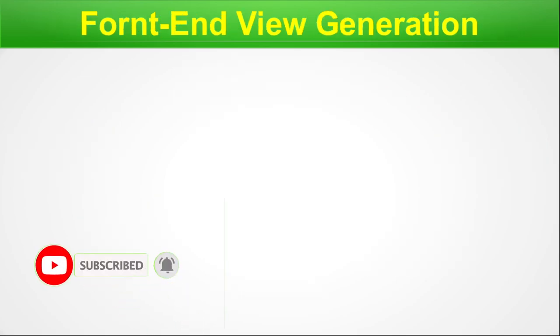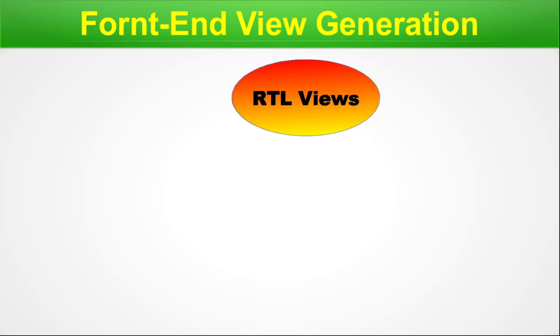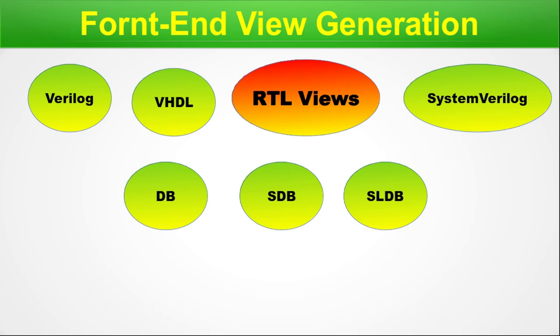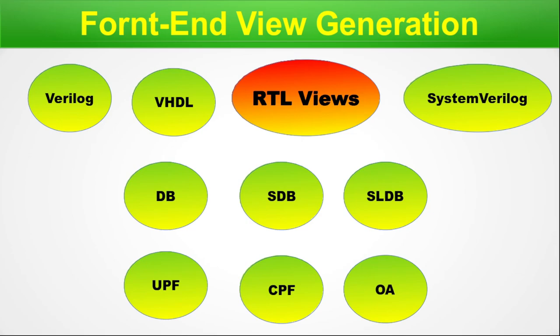Front-end views. The different front-end views available in a standard cell library — generated by standard cell design engineers — are majorly RTL views and some others. These include: Verilog, SystemVerilog, VHDL (plain RTL formats); DB, SDB, SLDB (Synopsys formats); UPF and CPF (UPF used by Synopsys, CPF used by Cadence tools); and Open Access (an open format used by all tools). With time more views can get included, so be prepared for other views as technology changes.